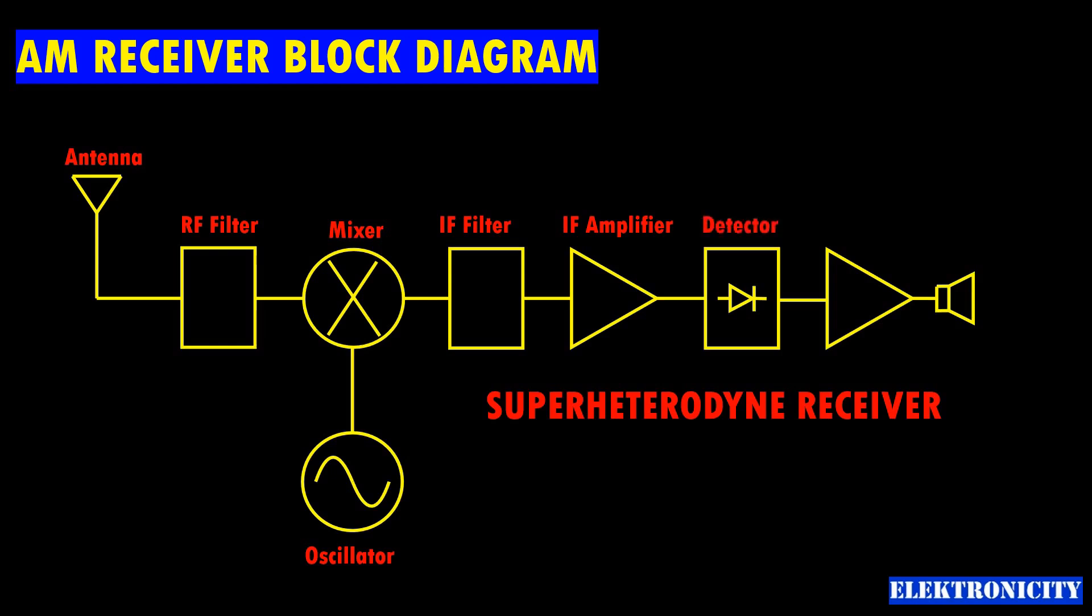Detector: it demodulates AM by rectifying the intermediate frequency. Audio amplifier: it amplifies the audio signal and passes it on to the speaker. Between the detector and the audio amplifier, a volume control potentiometer is used. Speaker: it outputs audio to the user.